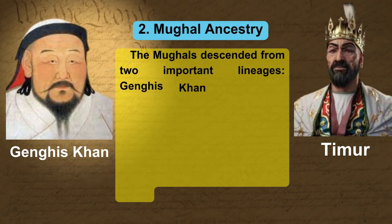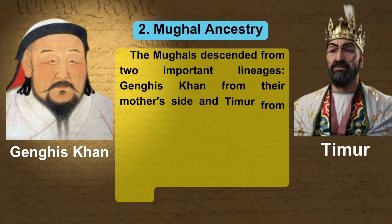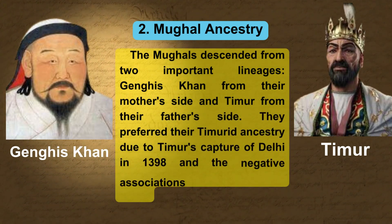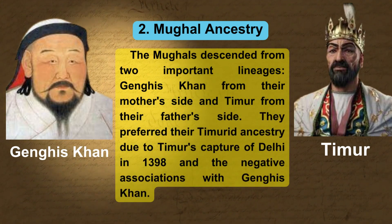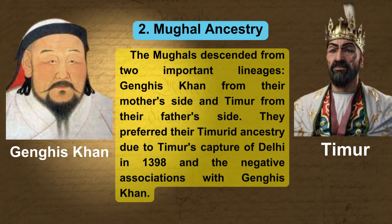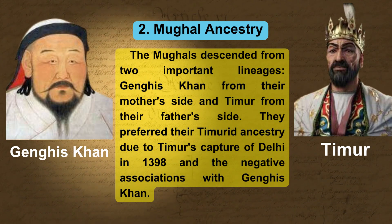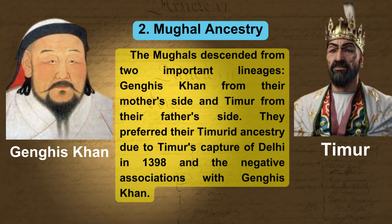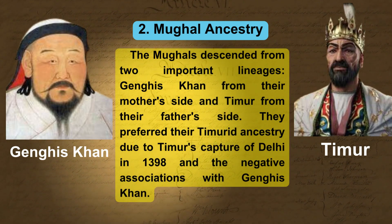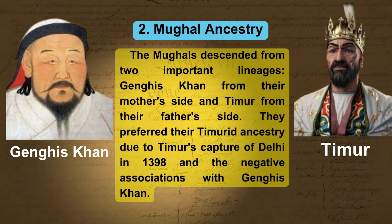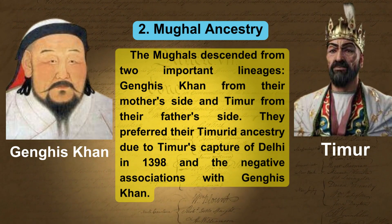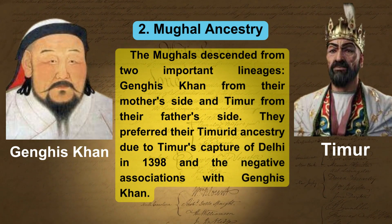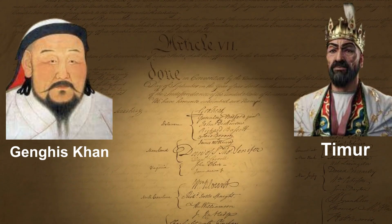2. Mughal Ancestry. The Mughals descended from two important lineages: Genghis Khan from their mother's side and Timur from their father's side. They preferred their Timurid ancestry due to Timur's capture of Delhi in 1398 and the negative associations with Genghis Khan.